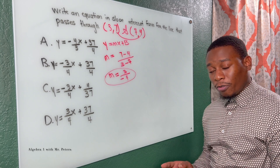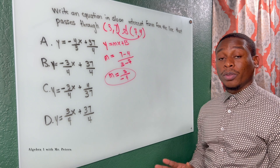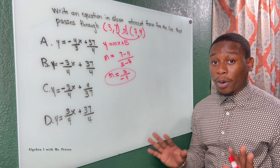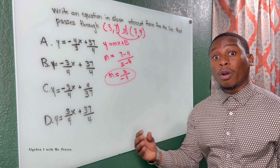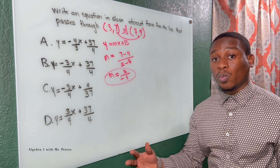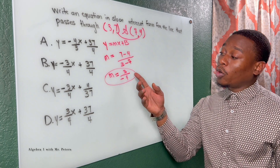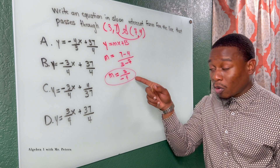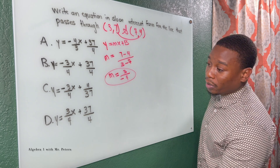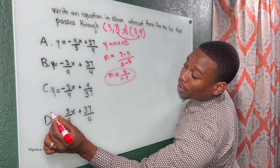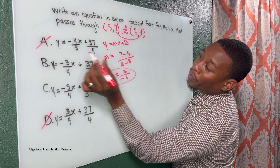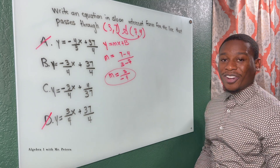Now that we have the slope, mind you, this problem did not say anything about perpendicular or parallel slopes. So the equation of a line — the slope is going to be what we have here. That means answer choices D and A are gone.